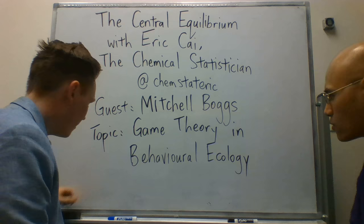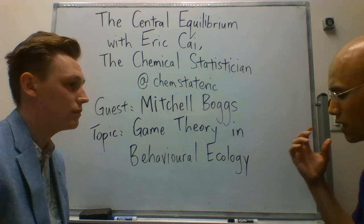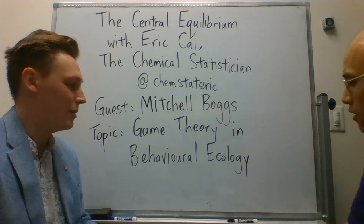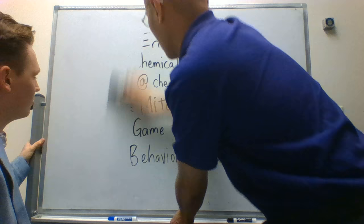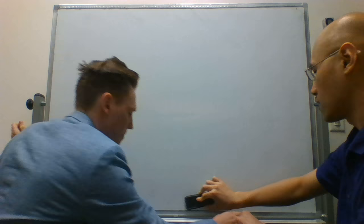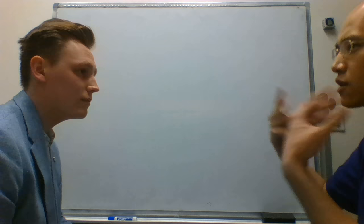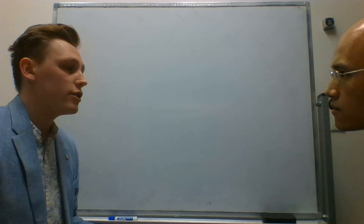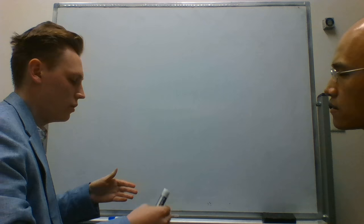I remember from my economics courses that game theory is often studied using payoff matrices. Can we do the same thing for animal behavioral ecology? Most definitely. So why don't we draw some payoff matrices? Before we draw the matrices, perhaps set up the scenario. Tell us what this conflict is about. The conflict we will be looking at will be over a reward — in this case, food. A piece of food is on the ground and two individuals meet each other at this piece of food. Let's say we're birds and we have found a piece of meat.